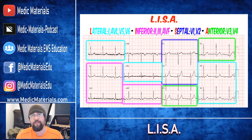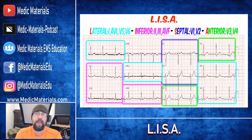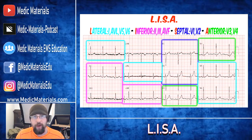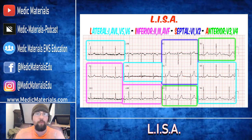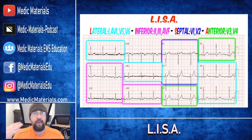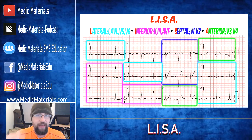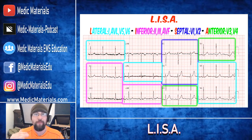Moving on, you have I for Inferior, and that's going to be your purple here. Inferior is leads 2, 3, and AVF — the bottom of the heart. That's your big one, the widow maker, if those ST elevations are super, super drastic.